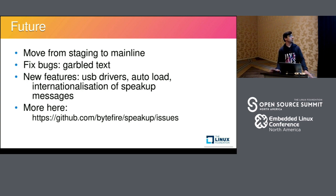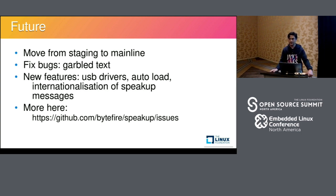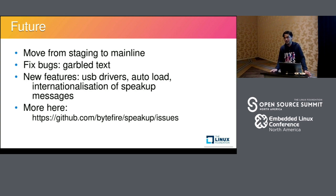In future, we want to complete the move into the mainline kernel out of staging and fix some bugs. There's one bug which is doing the rounds — garbled text. The irony is that most of the developers are not regular users of SpeakUp, so it's not easy to find and understand how irritating those bugs can be, and replicating them is also a bit difficult. But this seems like a race condition — it happens on SMP systems. There's a race somewhere, and it's hard to replicate. We don't know where the bug is coming from.